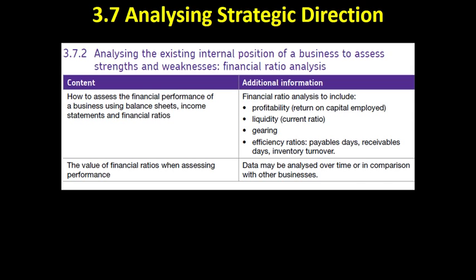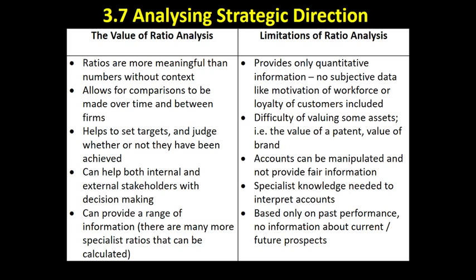Number one: calculate the ratios. Number two: interpret the figures — what does this mean for this company? Number three: make a recommendation or judgment. For example, if a business has a relatively low gearing of 18% and there's an expansion opportunity, you could recommend borrowing money to take advantage of it. You also need to be aware of the strengths and limitations of ratio analysis.